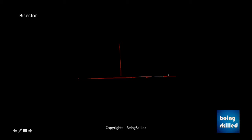We have a perpendicular where point A and point B are on a line, the intersection point is C, and this is D. DC intersects AB and forms AC and CB in such a way that AC equals CB. So in this case, CD is the bisector which divides AB into AC and CB, where AC is equal to CB.